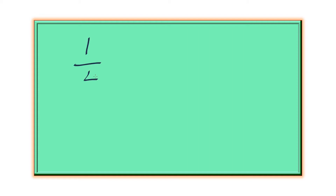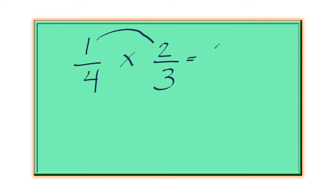Let's take another example. Let's say you have 1 fourth multiplied by 2 thirds. Again, we multiply top to top. That's 1 times 2 equals 2. And then 4 times 3 is equal to 12.